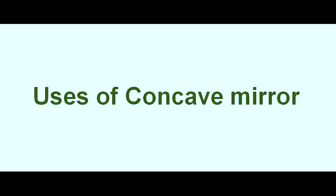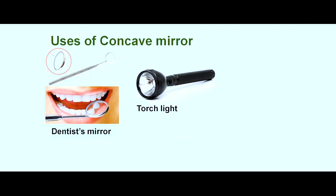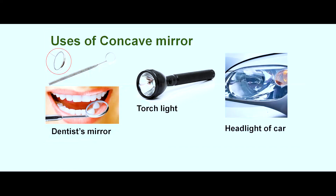These are some uses of a concave mirror: it is used as a dentist's mirror; it is also used as a reflector in torchlight; and it is also used as a reflector in headlights of cars or vehicles. You can try to find some more uses.